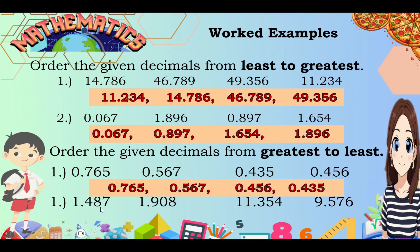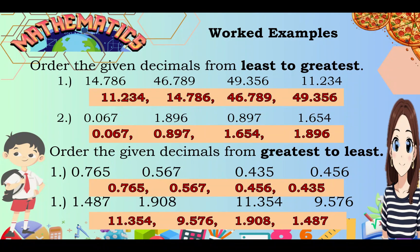For the second set: 1 and 487 thousandths, 1 and 908 thousandths, 11 and 354 thousandths, and 9 and 576 thousandths. Their whole numbers tell us 11 and 354 thousandths is the greatest and comes first, followed by 9 and 576 thousandths. For the two with whole number 1, comparing the tenths place: 4 is less than 9, so the order is 1 and 908 thousandths, then the least is 1 and 487 thousandths.